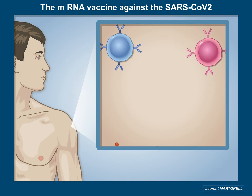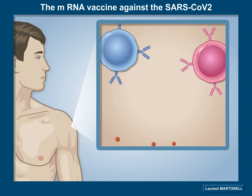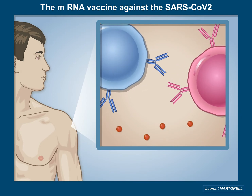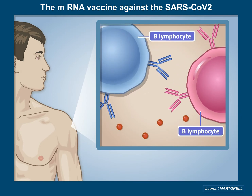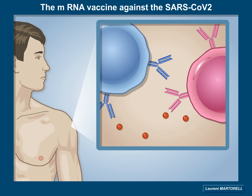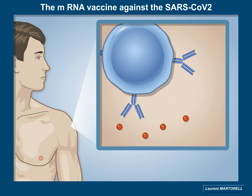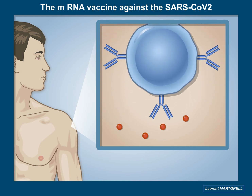The immune system comes now into play, and some B-lymphocytes will be selected according to their affinity with the S-protein. Some specific membrane-bound B-cell receptors are involved in this recognition process. Once selected, some B-lymphocytes divide and differentiate into plasma cells specialized in the production of antibodies.